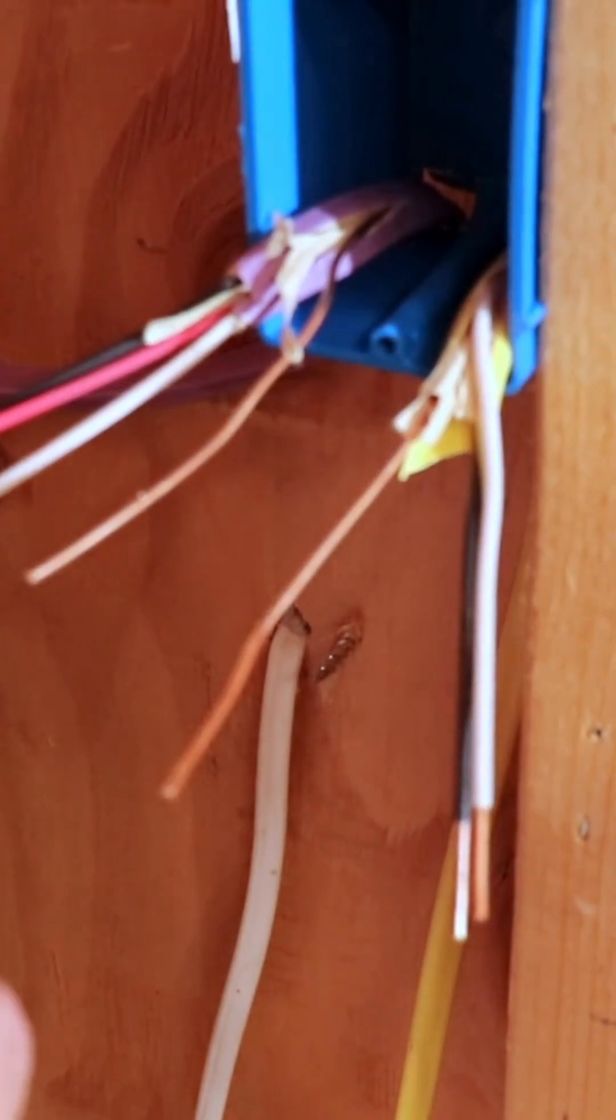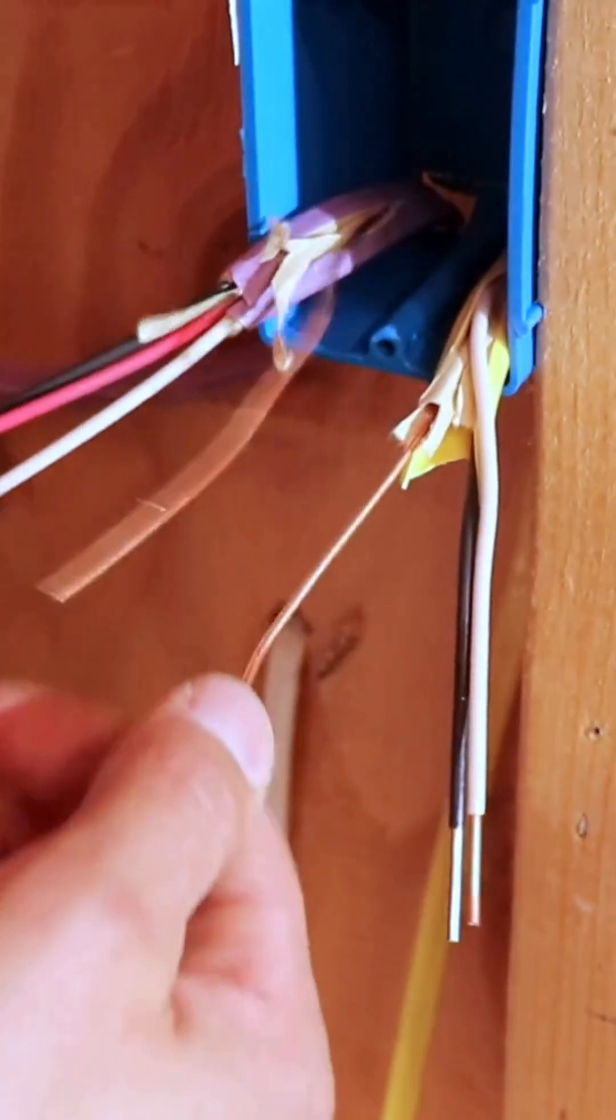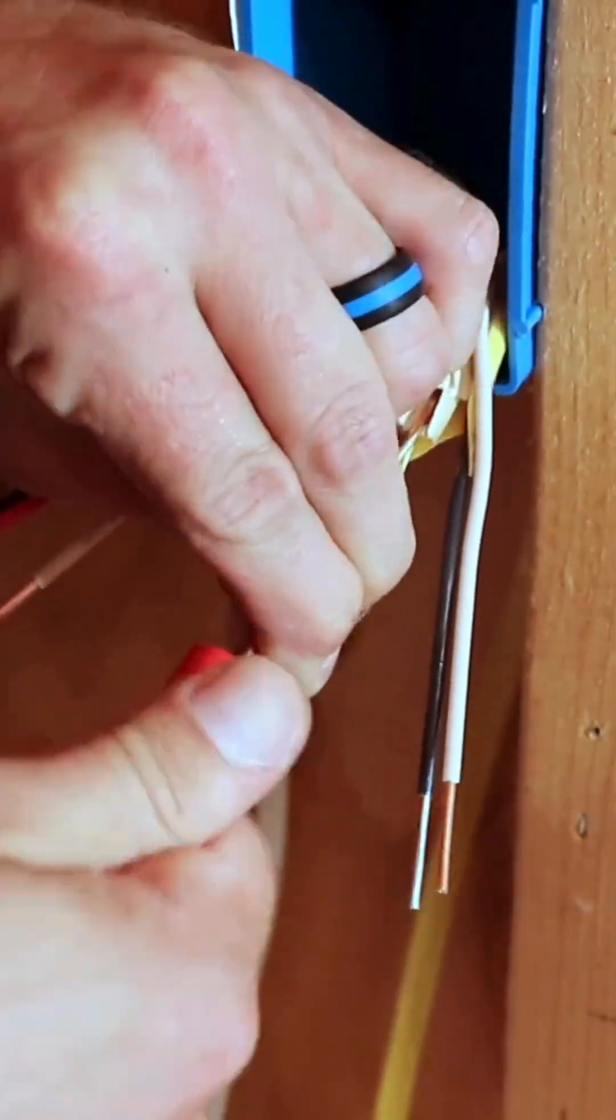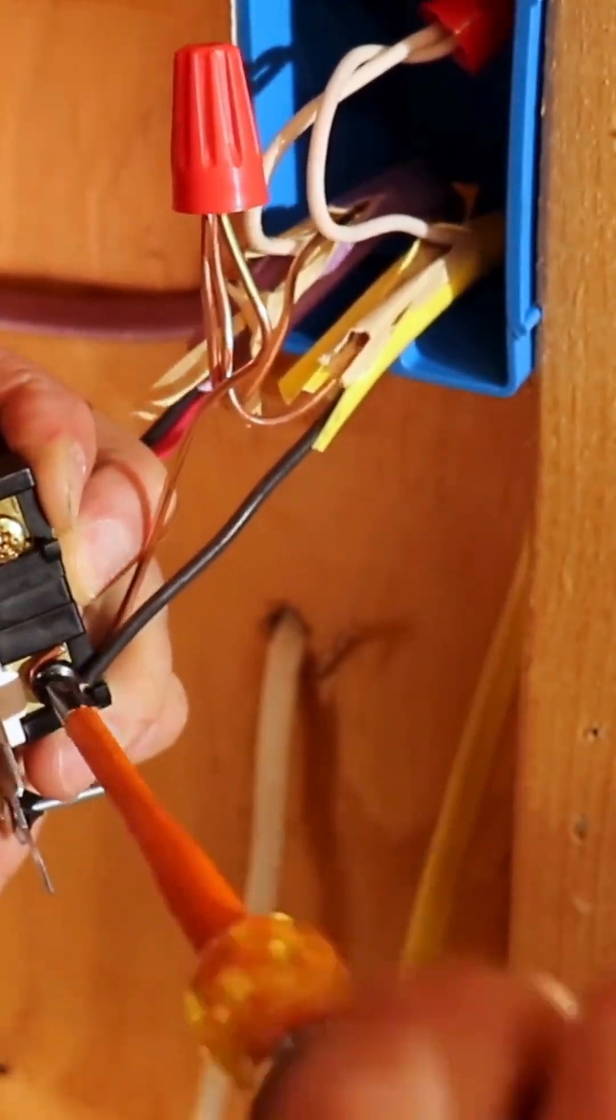To wire this switch, we first need to wire nut the grounds together and use a pigtail to connect the ground wire to the switch. Next, we can wire nut our neutrals together, then we can connect our hot wire from the 12-2 to the common terminal, which is the black terminal.